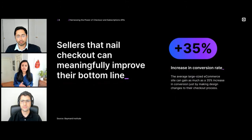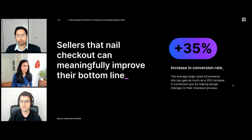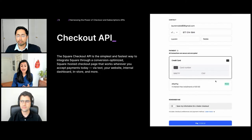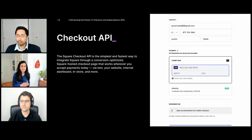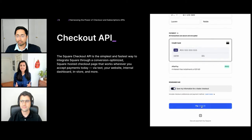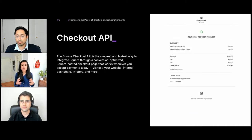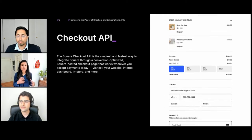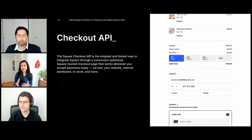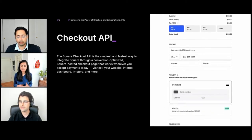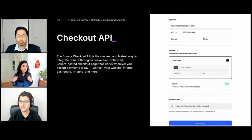Nailing that checkout flow and design is really important and can have a meaningful impact on your bottom line. In fact, a large e-commerce site can increase their conversion rate by as much as 35% by just making design changes to checkout. The checkout API is the simplest and fastest way to integrate Square payments into any workflow. With minimal coding, you can render a Square-hosted payment page for your customers — no front end needed, we'll handle the UI.